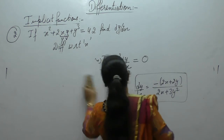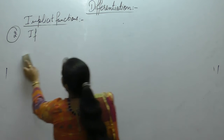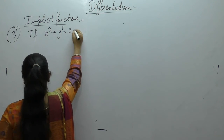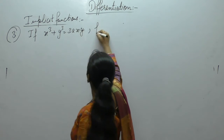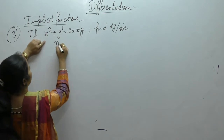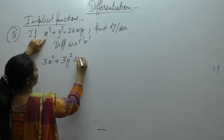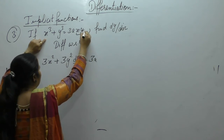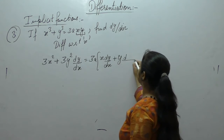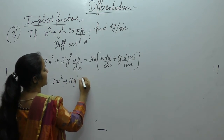Next one: if x³ + y³ = 3axy, find dy/dx. Differentiate with respect to x. Derivative of x³ is 3x². For y³, derivative is 3y²·dy/dx. On the right side, 3a is constant; apply the u·v rule for xy: first function as it is, derivative of second, plus second as it is, derivative of first. So we get 3x² + 3y²·dy/dx = 3ax·dy/dx + 3ay.